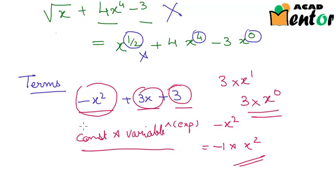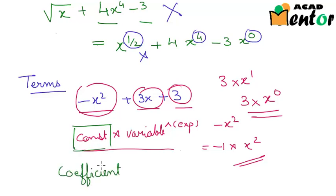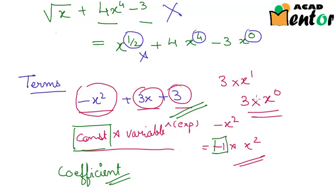The constant that is multiplied to the variable is known as the coefficient — the coefficient of that particular term. So the coefficient of x squared in this polynomial is negative 1, while the coefficient of x in this polynomial is 3.